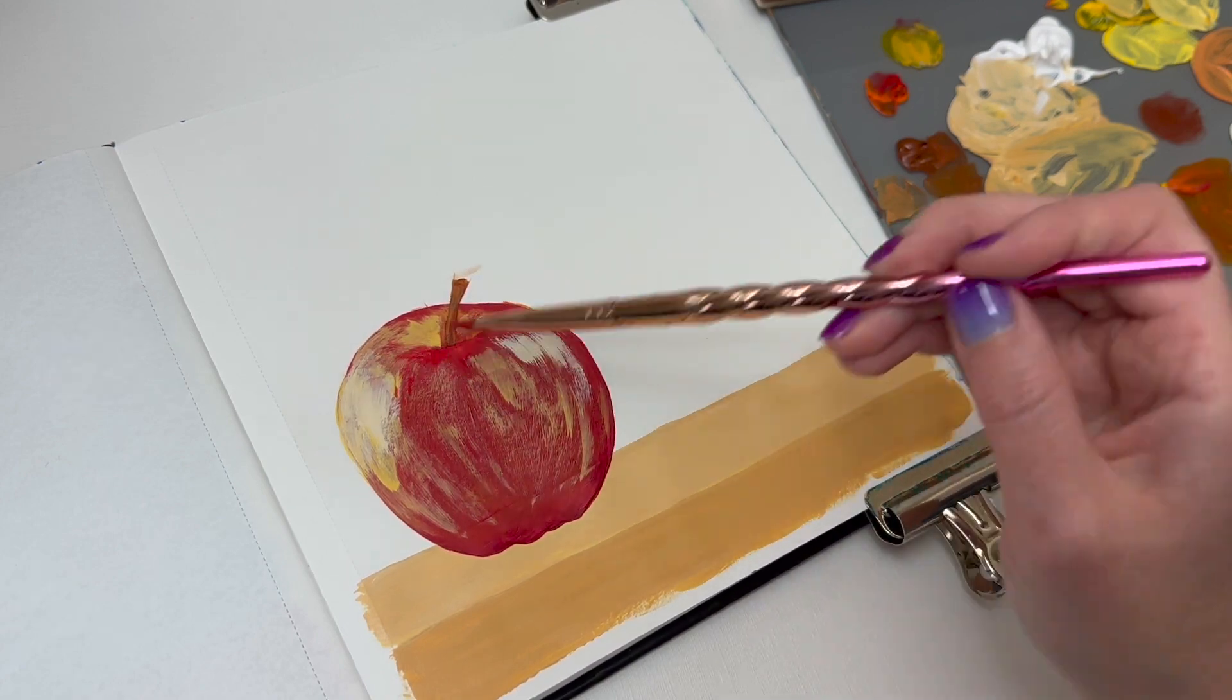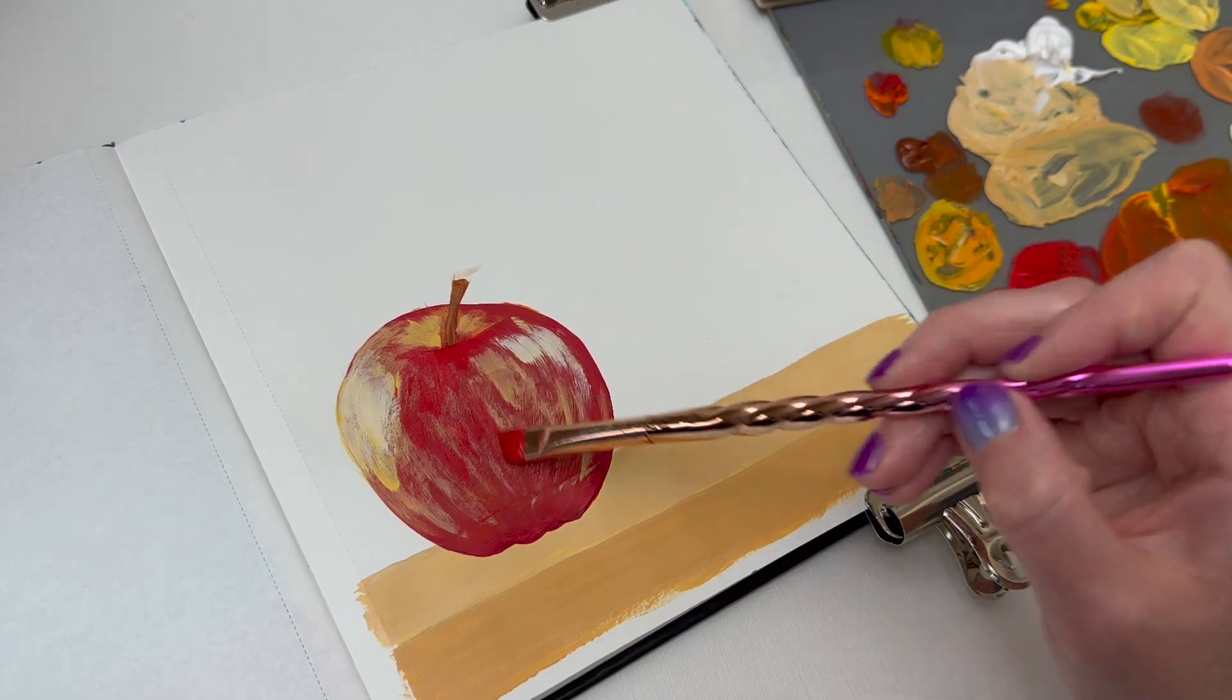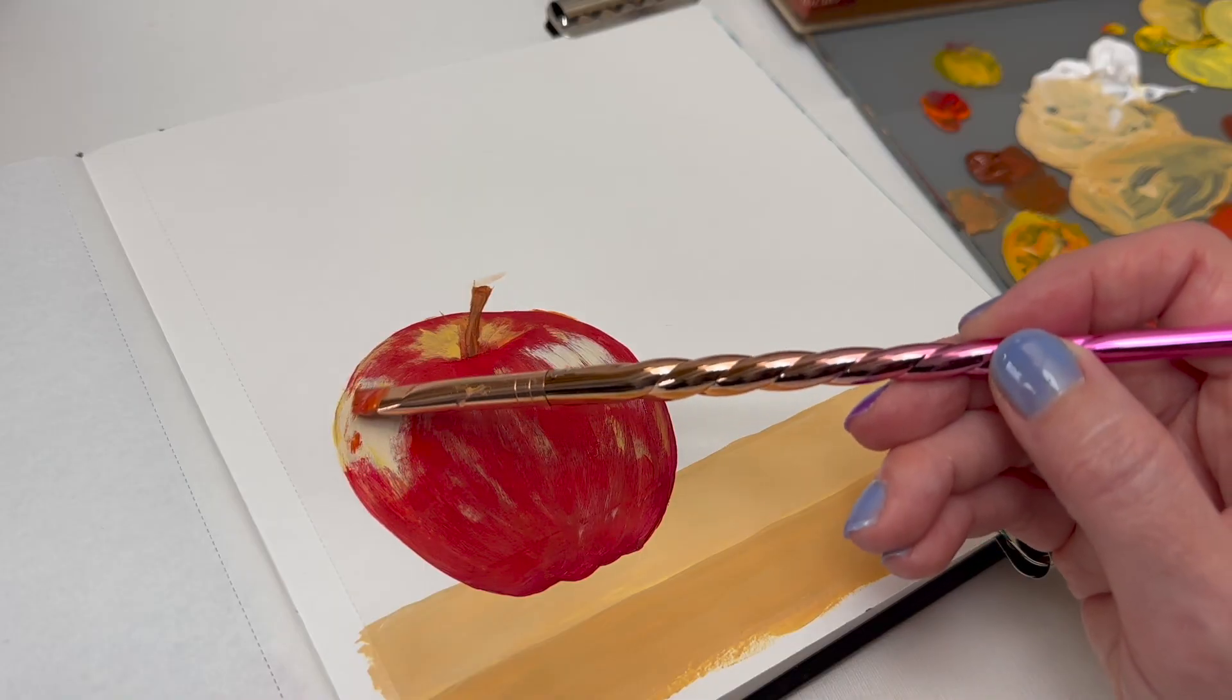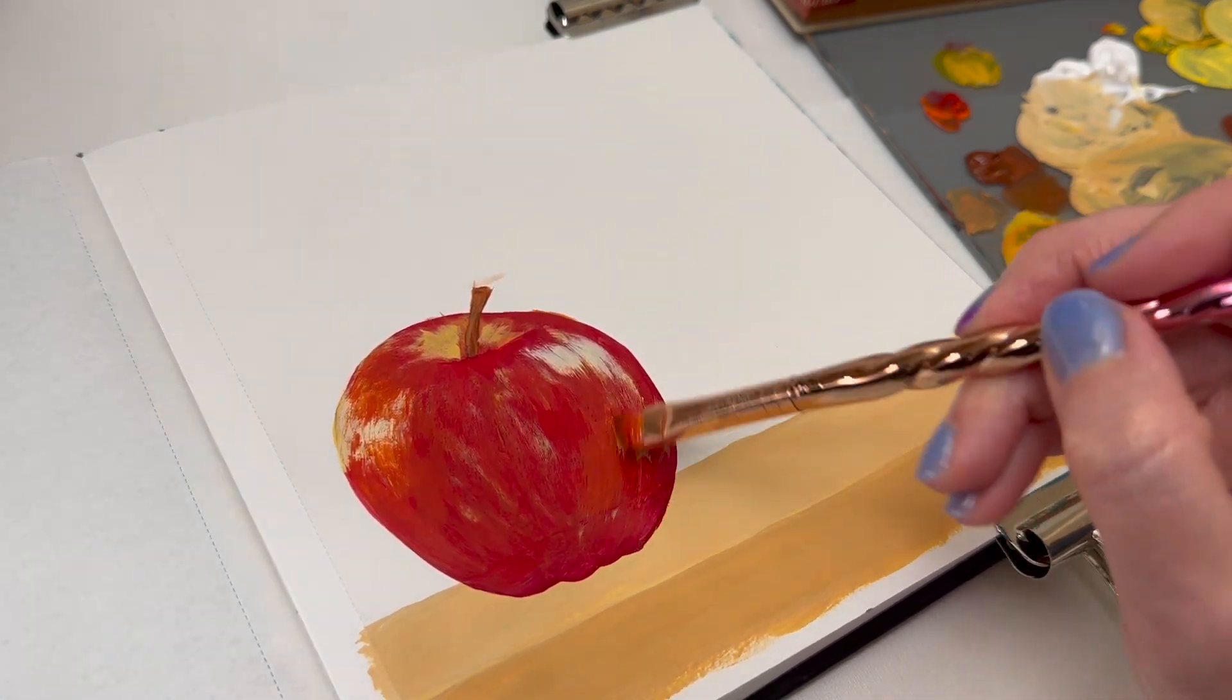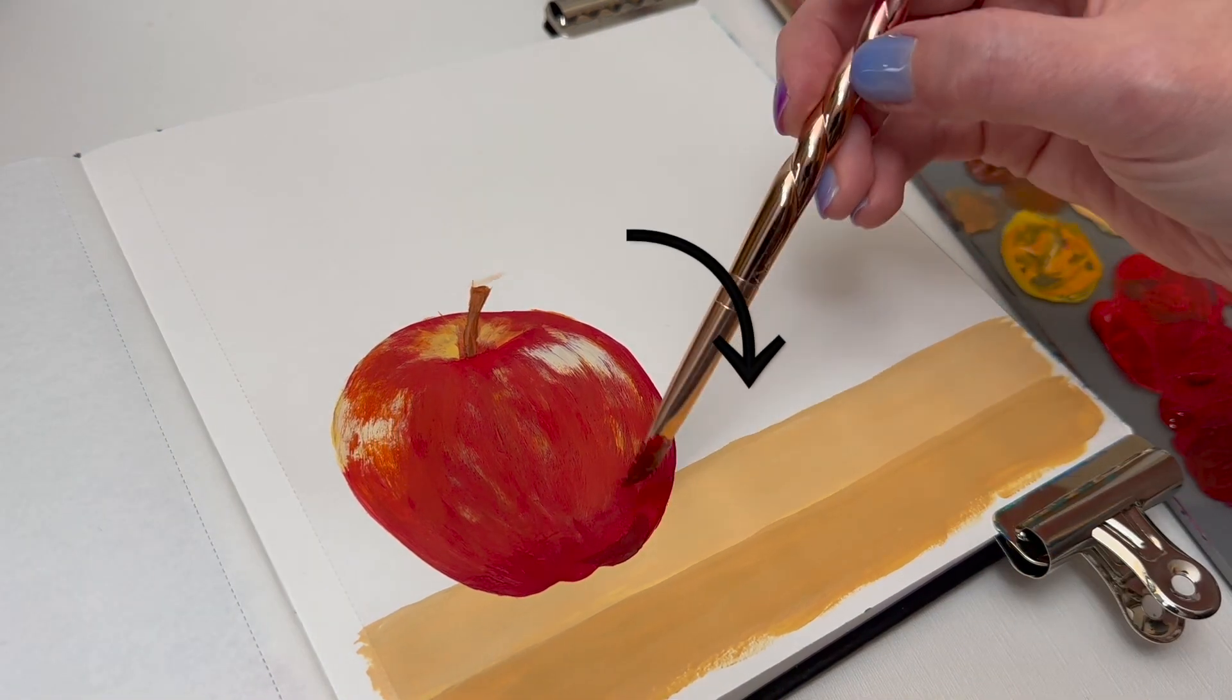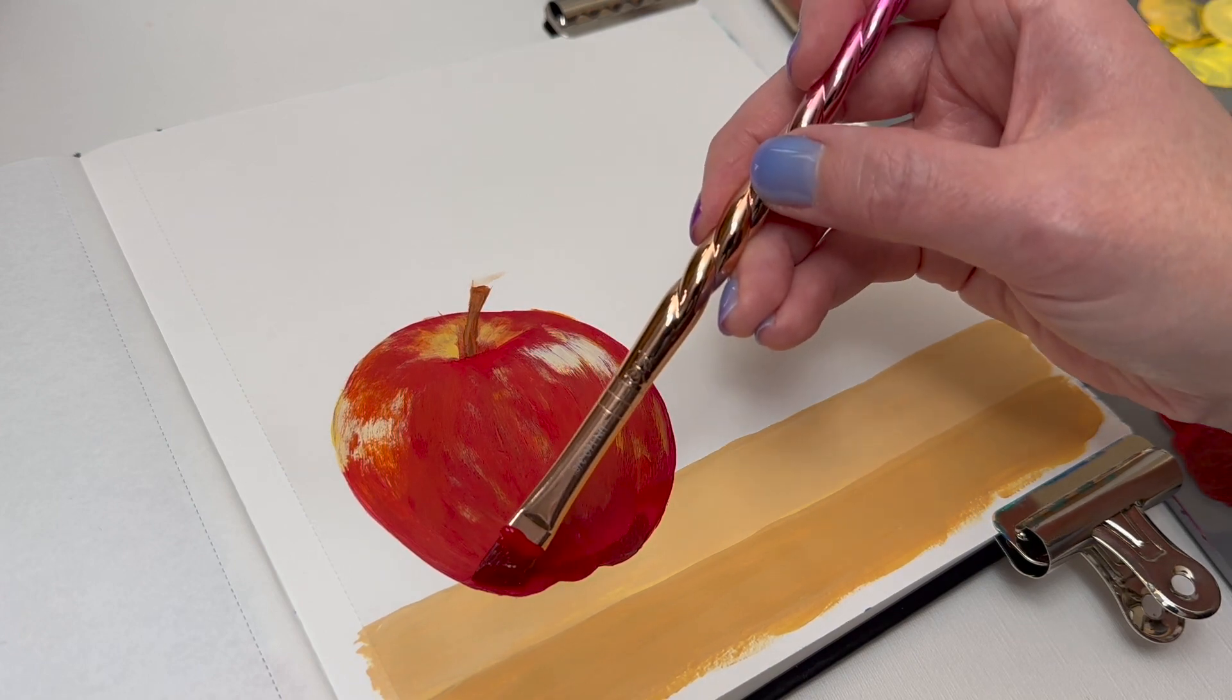For example, this apple has a round surface. When you're painting, it's kind of hard to think of the flat paper or canvas that you're painting on as a round surface, but it really helps if you use your brush strokes to paint around the planes of the surface, if that makes sense.